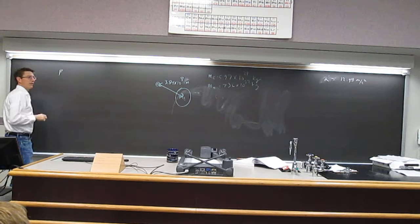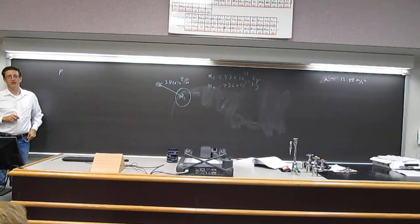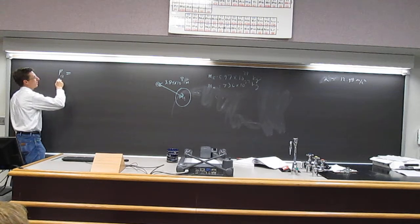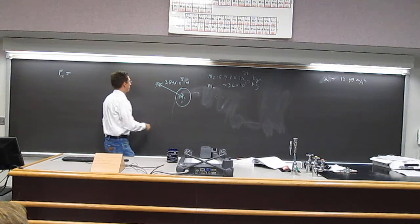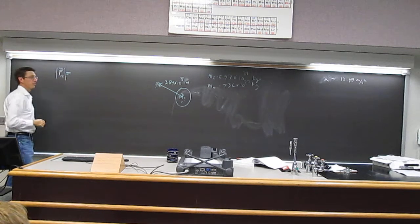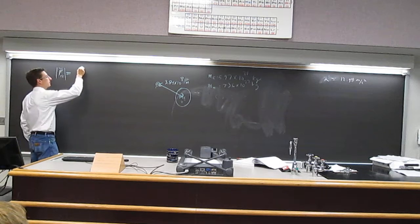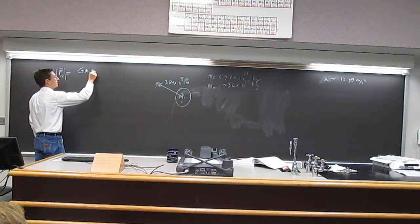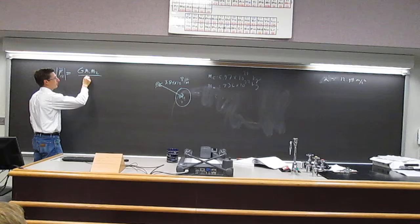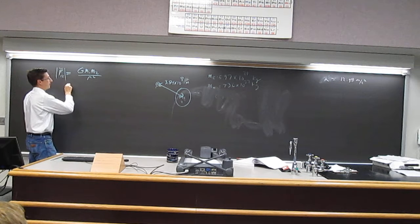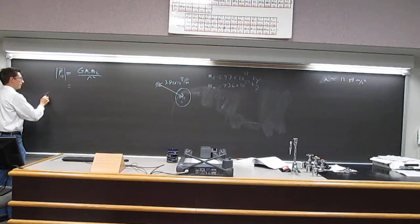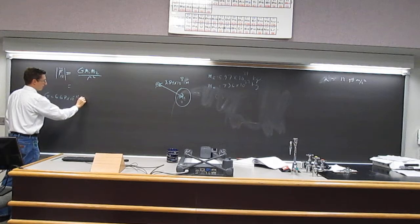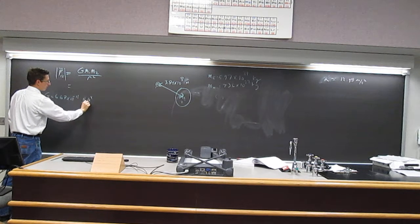So do you remember what the formula for gravitational force attraction between two masses was? So if I write 1 and 2, maybe 1 and 2 here, the magnitude of the force between 1 and 2 is going to be this universal gravitational constant, mass 1, mass 2 over the distance between them squared. So if I plug in numbers here, that big G was 6.67 times 10 to the minus 11 newtons, meters squared per kilogram squared.